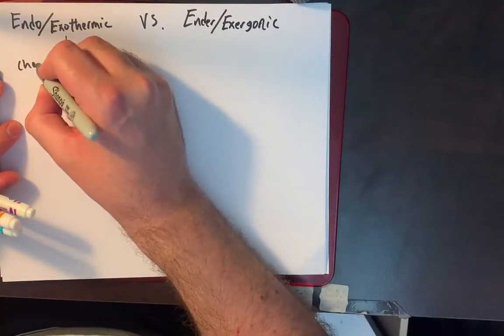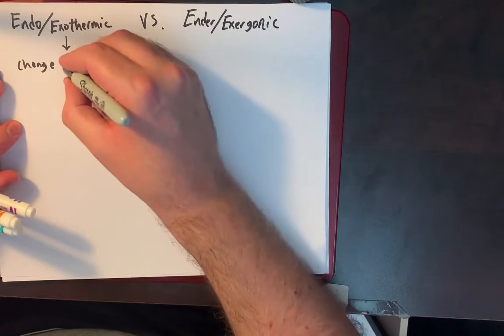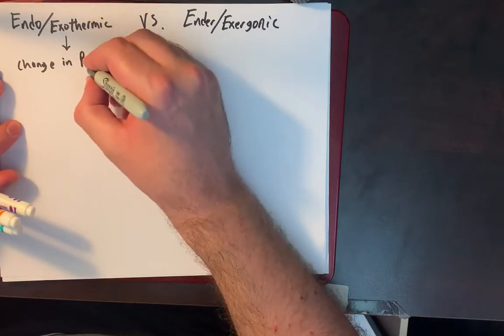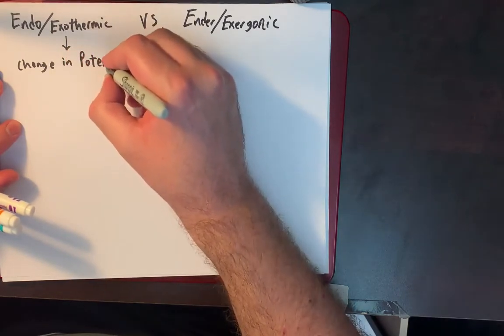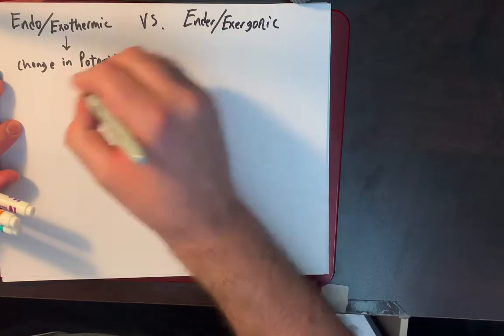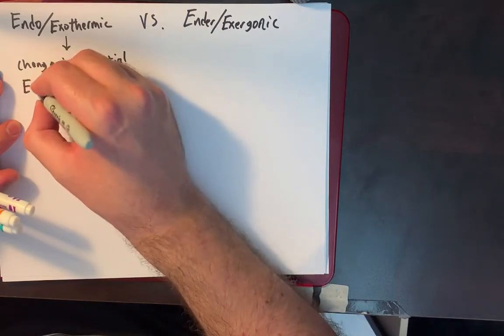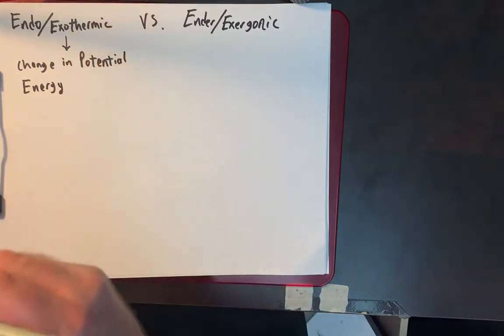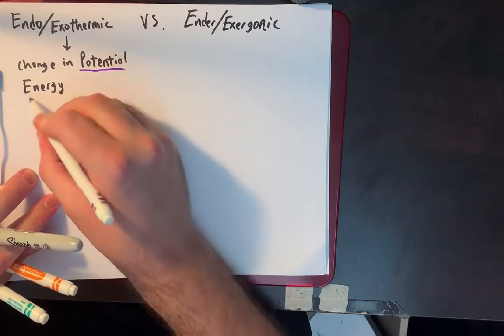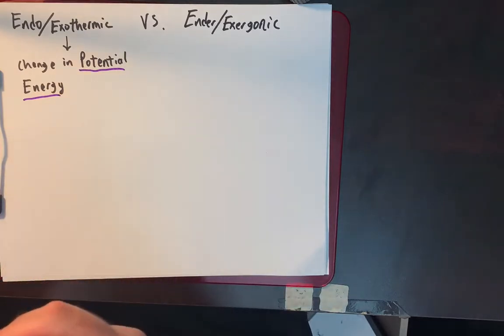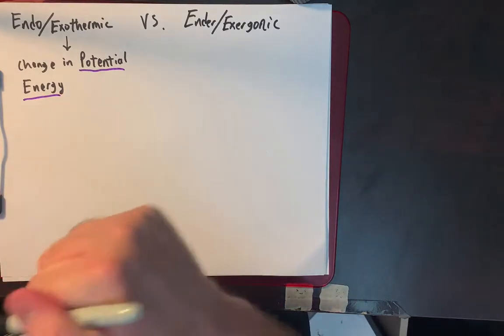So for endo or exothermic, we have a change in potential energy. It can be any kind of a process that we want to. There's a change in potential energy that takes place here.